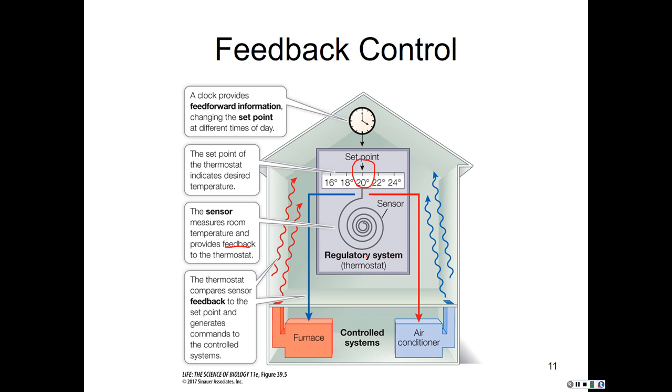The thermostat will compare feedback to the set point and then generates a command. If the feedback our thermostat gets is that it is too much above the set point, then it will turn on the air conditioner to lower the temperature. If the feedback is that we are too far below the set point and it's too cold, then it will kick on the heat.